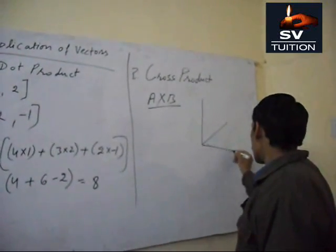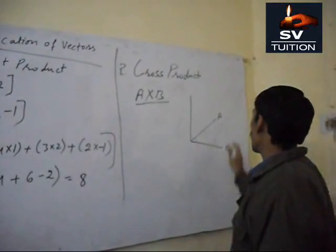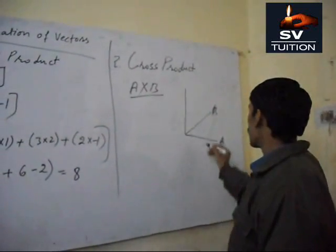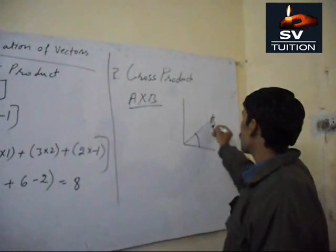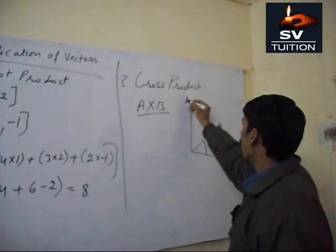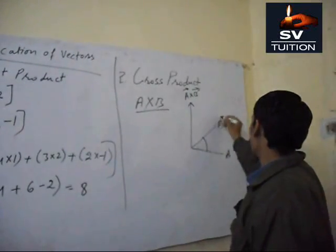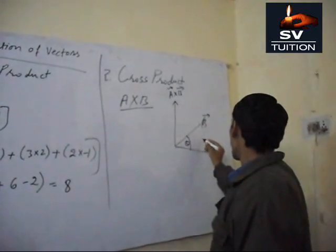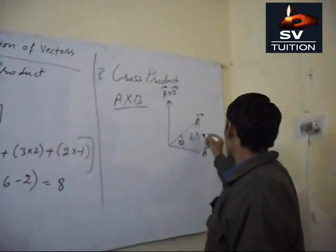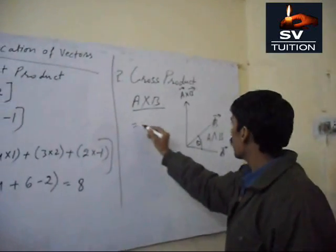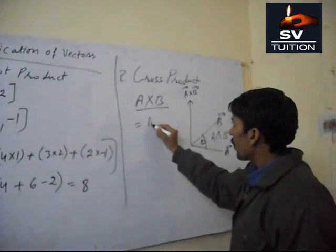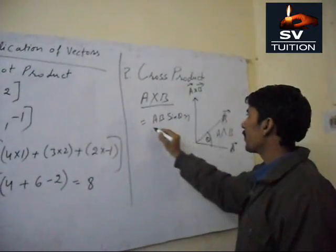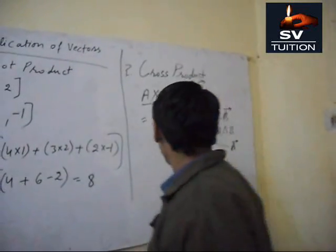This is A vector, this is B vector. If we multiply A with B, it will be A multiply B vector. This is B vector, this is A vector. This is B vector at theta, A vector oblique B vector. And its value will be AB sin theta N.